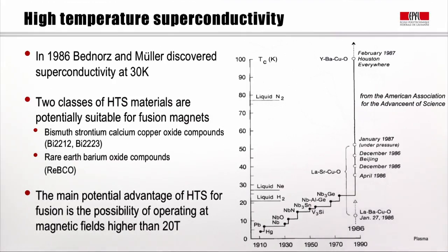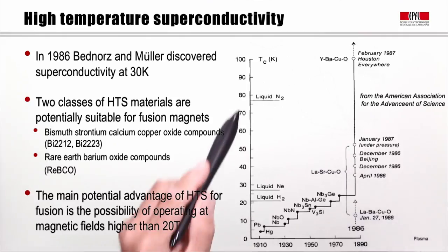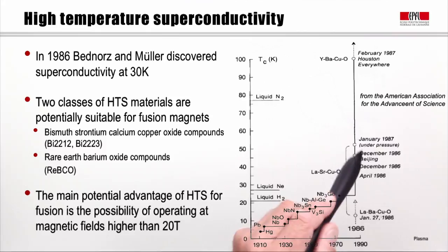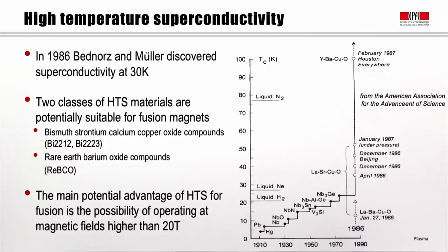Before completing the family of possible superconductors for fusion, I mention the discovery of high-temperature superconductivity, which can open up new avenues. The discovery was made by Bednorz and Müller in 1986 in Switzerland, who found superconductivity at 30 degrees Kelvin. The plot on the right shows the critical temperatures for different materials as they evolved throughout the years, with a big jump when high-temperature superconductivity was discovered — an almost vertical development in the first couple of years. Nowadays we have two classes of HTS materials suitable for fusion magnets: bismuth strontium calcium copper oxide compounds (Bi2212 or Bi2223), and rare-earth barium copper oxide compounds, generally referred to as REBCO.